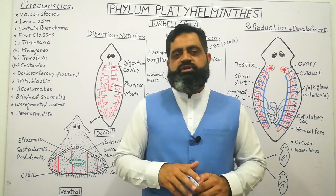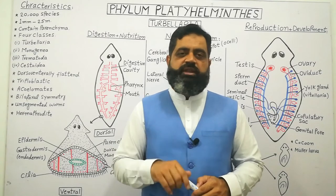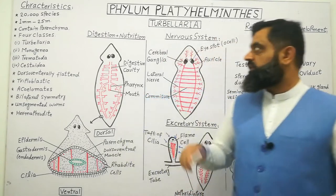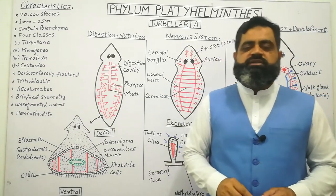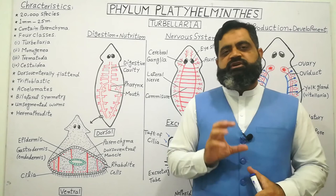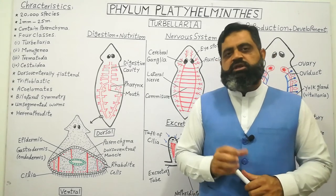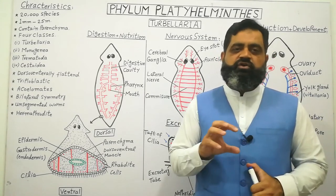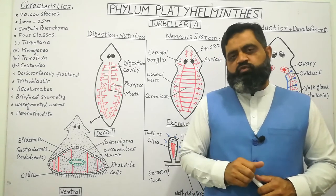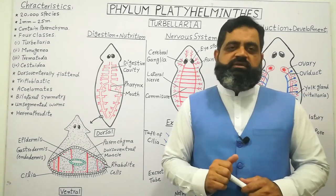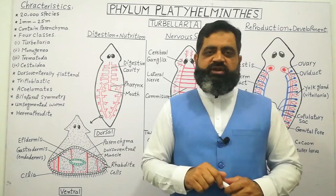Now we are going to discuss the first class of Phylum Platyhelminthes, which is known as Turbellaria. Class Turbellaria is also known as turbellarian because they produce turbulence in the water. When they move in the water they produce a kind of opaqueness in the water, due to the presence of cilia on their ventral surface.